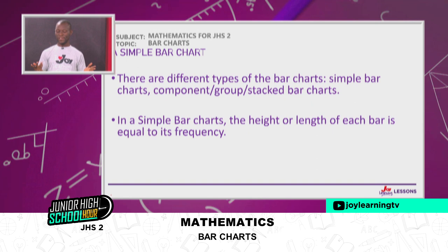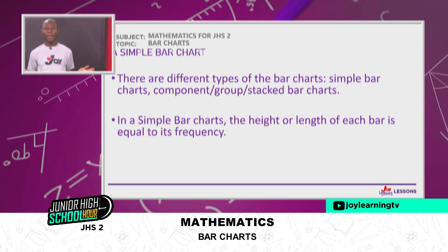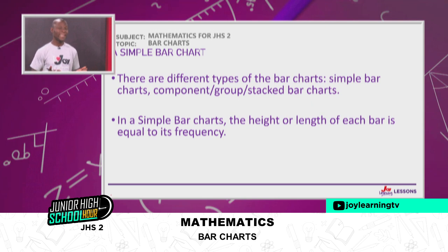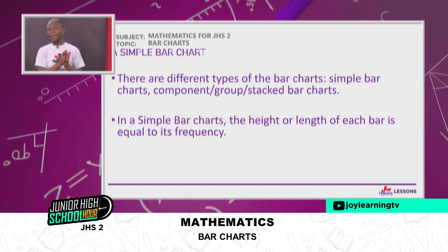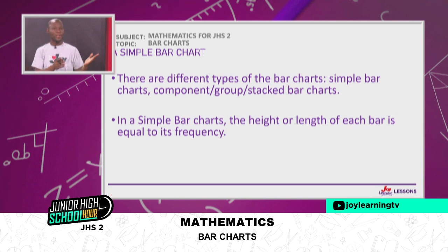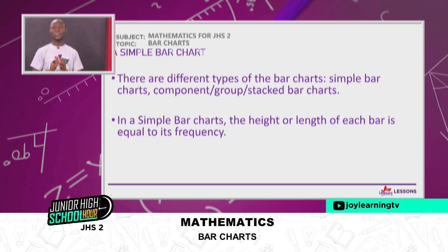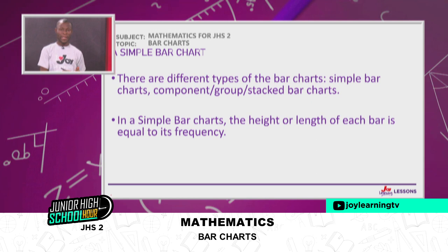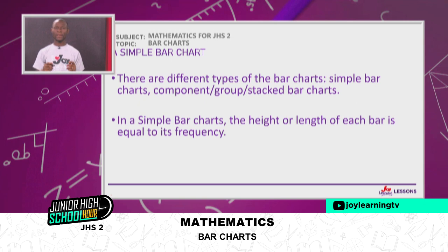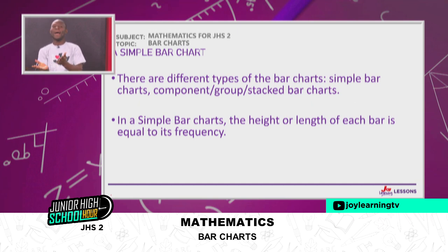In the simple bar chart, the height or length — depending on whether you are using vertical or horizontal bars — of each bar is equal to its frequency. So if I was looking at the number of people born on a certain day in the class, and those born on Monday were 18, the height of Monday's bar should correspond to the frequency of 18. Those born on Tuesday were 22, so the bar for Tuesday should have height 22.